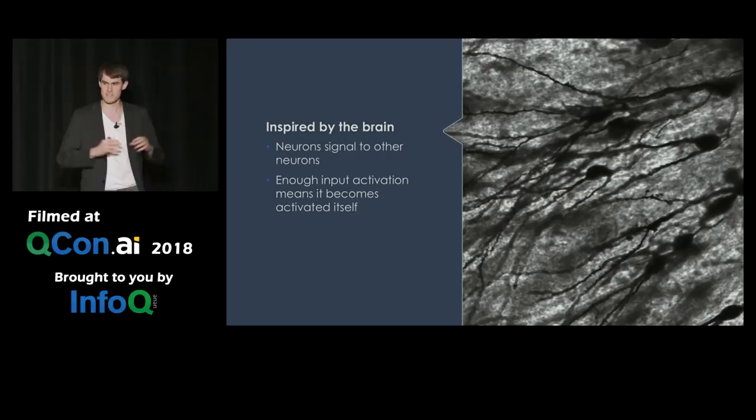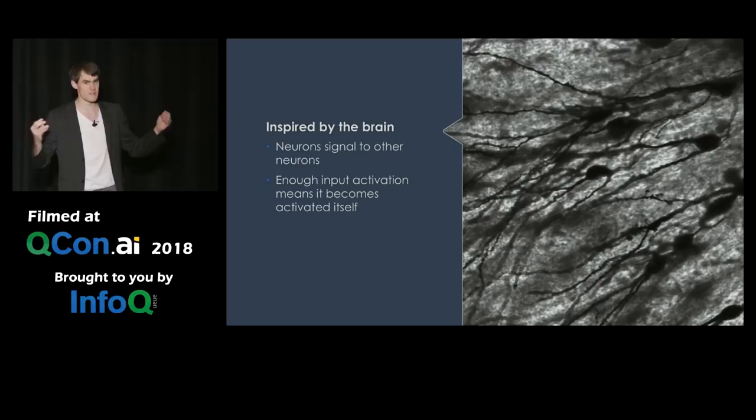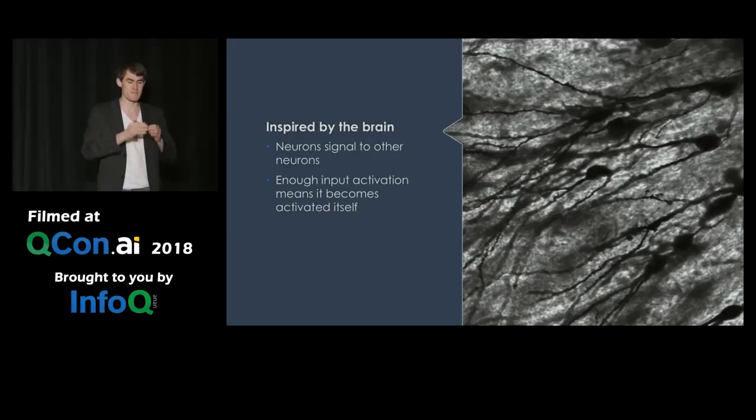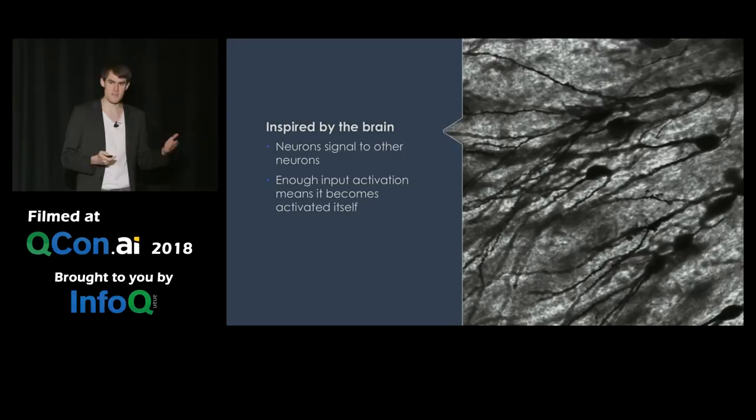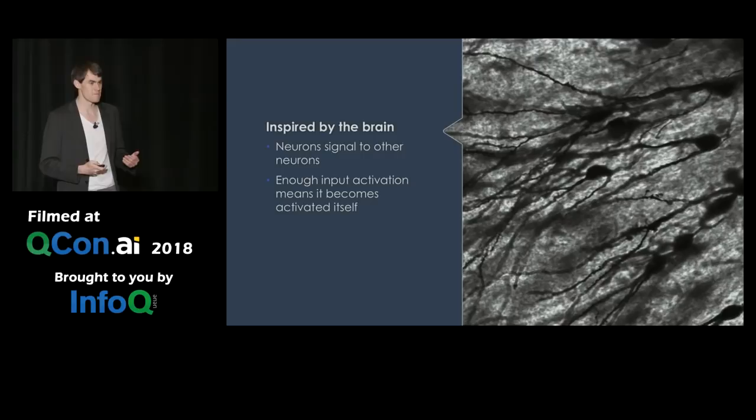First of all, I think it's important to know that this whole neural network thing is inspired by the brain. In your brain you see neurons — these big black dots — and they are connected to other neurons via spikes. If one neuron receives a lot of inputs by spiking other neurons and gets activated enough, then it starts spiking itself and activates other neurons. People were thinking: how can we put this into some kind of mathematical, programmatical model?